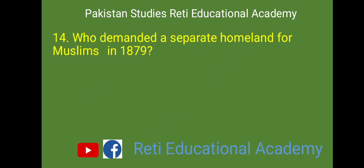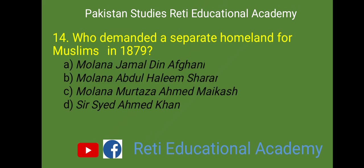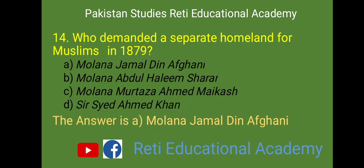MCQ number 14: Who demanded a separate homeland for Muslims in 1879? A. Maulana Jamal-ud-Din Afghani, B. Maulana Abdul Halim Sharar, C. Maulana Murtaza Ahmed Maikash, D. Sir Sayyid Ahmad Khan. And the right answer is A. Maulana Jamal-ud-Din Afghani.